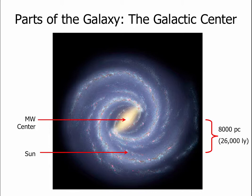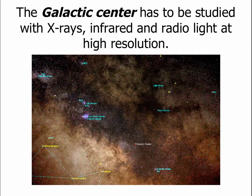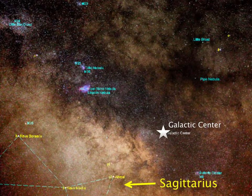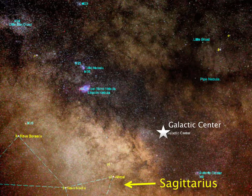The center of the galaxy is about 8,000 parsecs — that's 26,000 light years away — in the direction of Sagittarius. We have to study the galactic center at wavelengths other than optical light, because there is so much dust in the way that no optical light from the center of our galaxy reaches us. So we study it with x-rays, infrared light, and radio waves, because these can penetrate the dust.